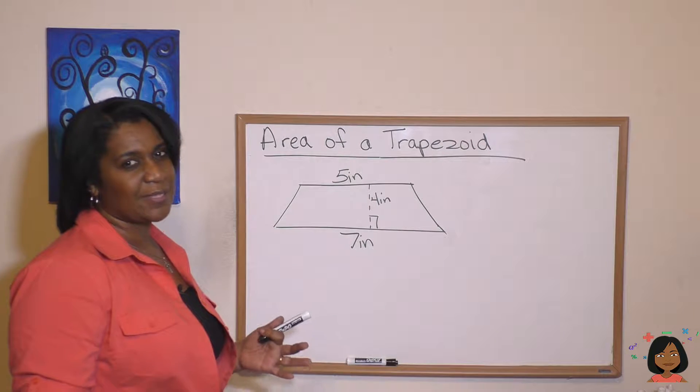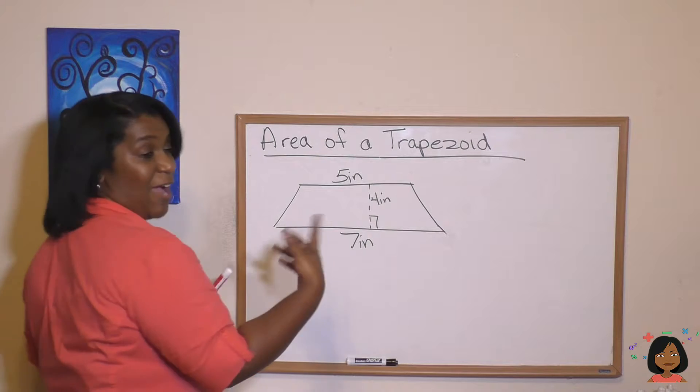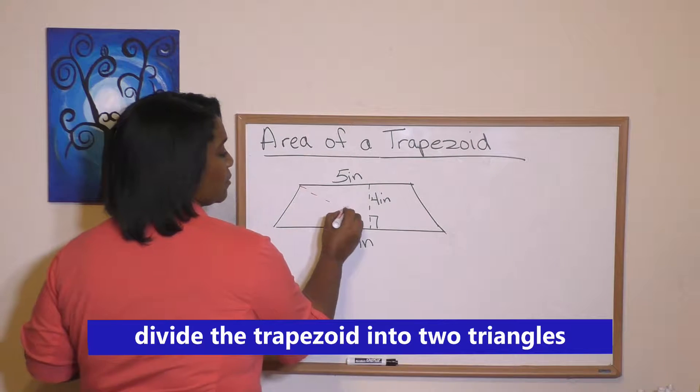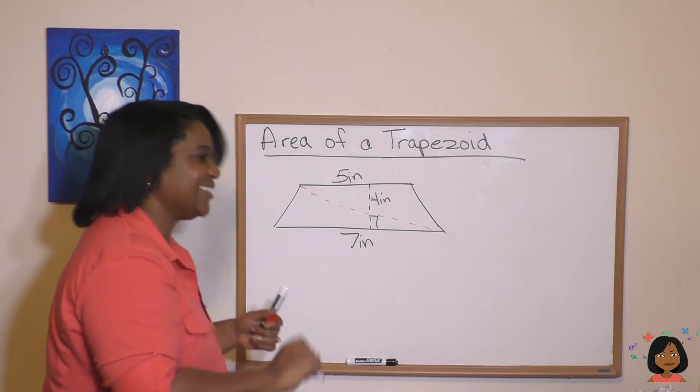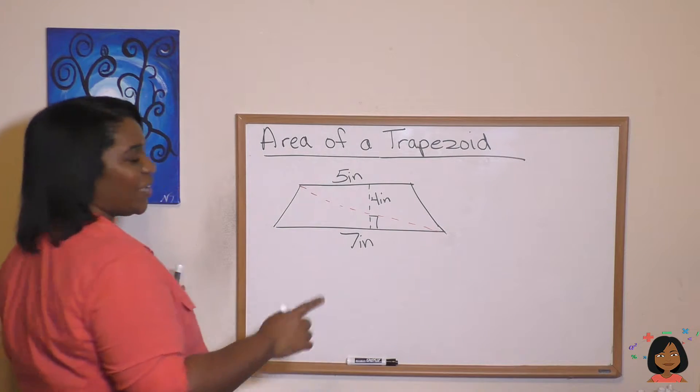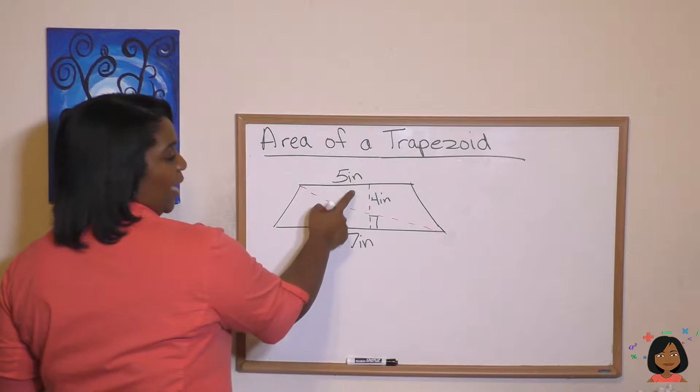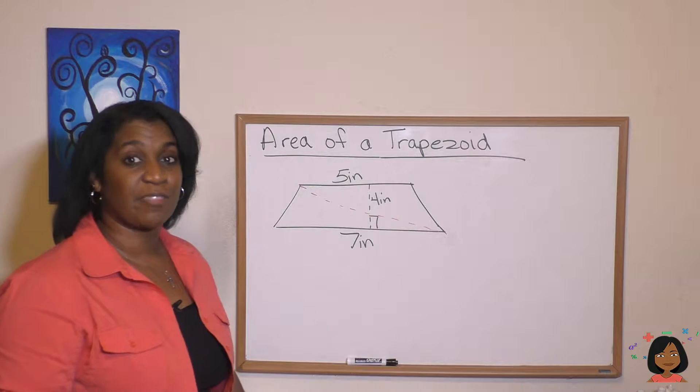Now how do we find the area? Well, I want you to notice that a trapezoid can be divided into two triangles. Oh, that wasn't a very good straight line. Pretend it's straight. Now, what does that mean? It means we have a triangle here and we have a triangle here. And what do we need of triangles to find their area?